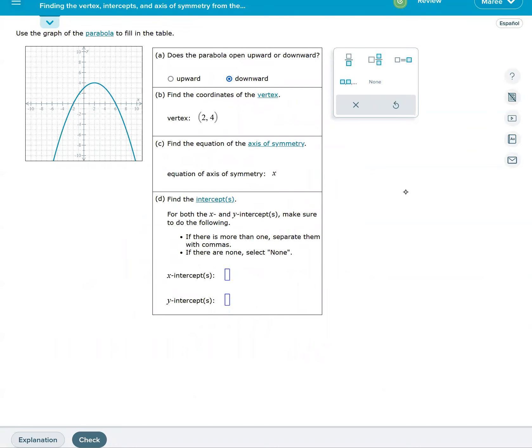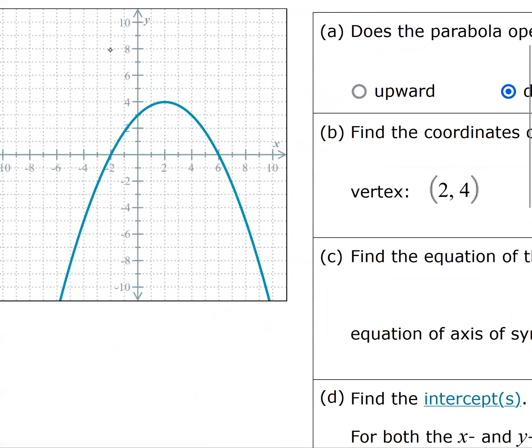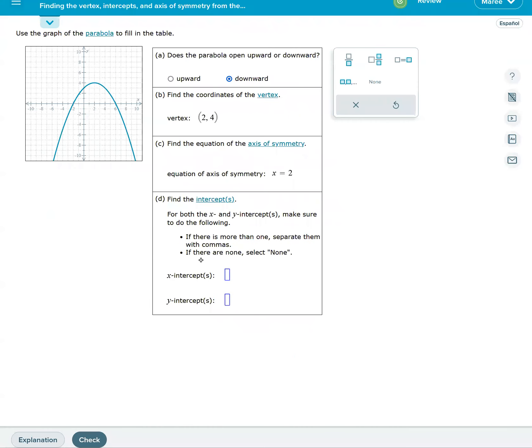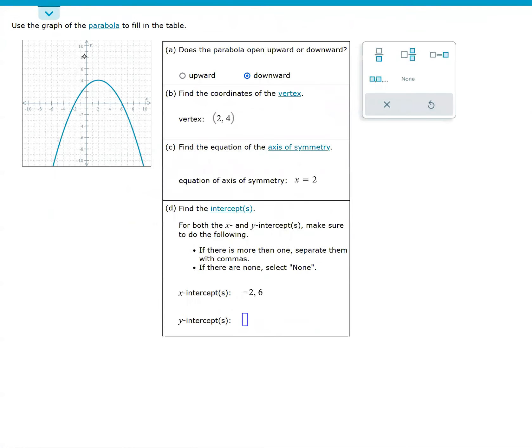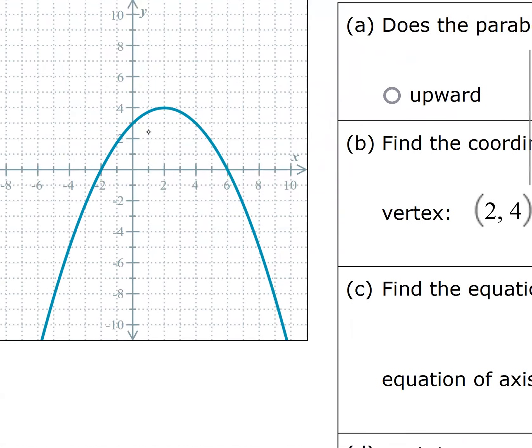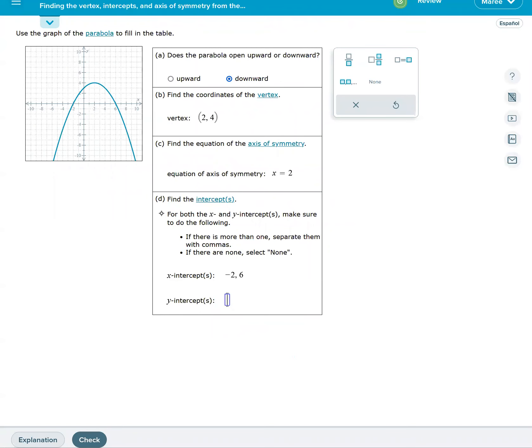Now we want to find the x and y intercepts. On x, it is crossing at -2 and 6, so we're going to type in -2 and 6. The y intercept, when we look at the y axis, is only going through 3, so we'll type a 3 right here, and that's our y intercept.